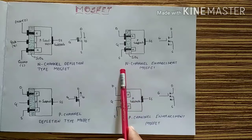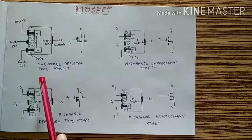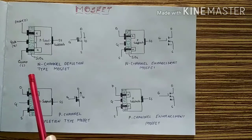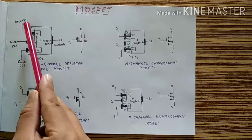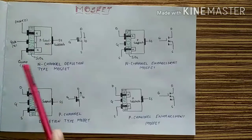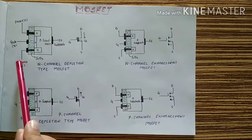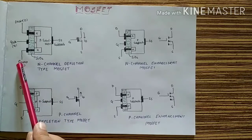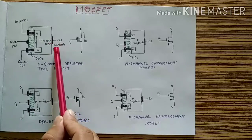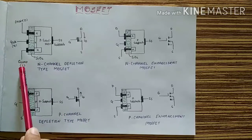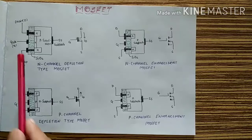Now let's see the basics of the depletion type MOSFET with N channel. In N-channel depletion type, there are three terminals: drain, gate, and source, and one more terminal known as the substrate. This P substrate is internally connected with the source — that is an important point — and an extra terminal comes out, which is labeled as S (substrate/source).